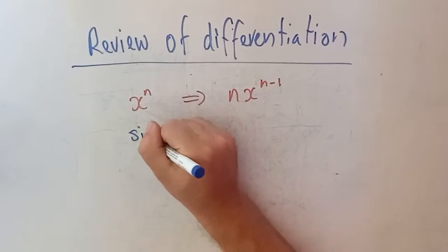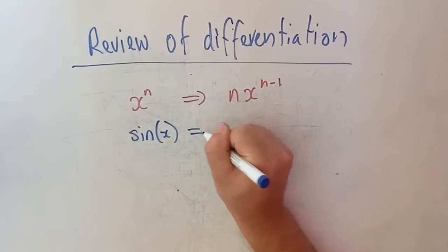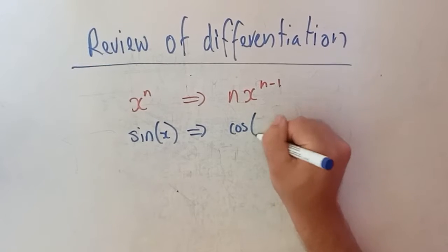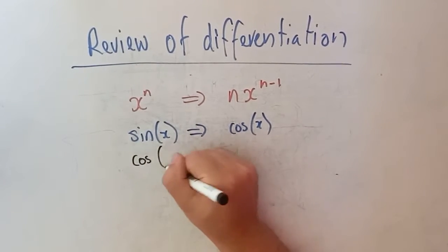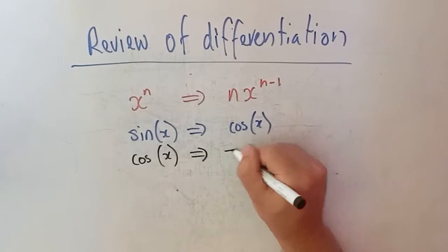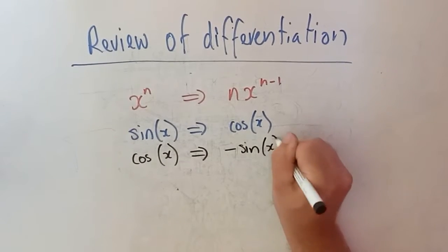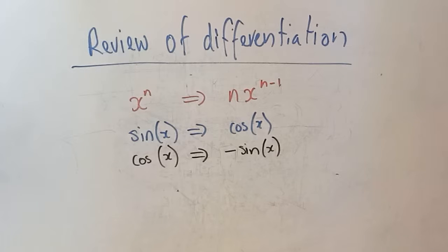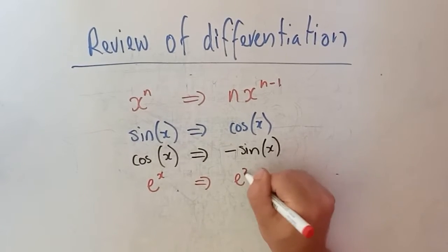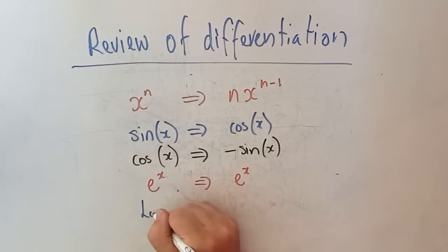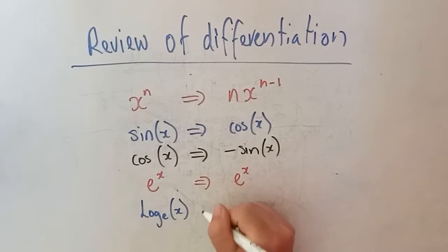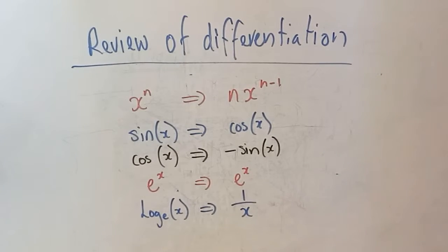If we've got trig functions — say sine of x — we know that differentiates to cos of x. All this should be relatively familiar to you. Cos of x differentiates to negative sine of x. E to the power of x: its derivative is itself, which is a lovely little formula. And log to the base e of x differentiates to 1 over x. So those are the basic rules we need to know.